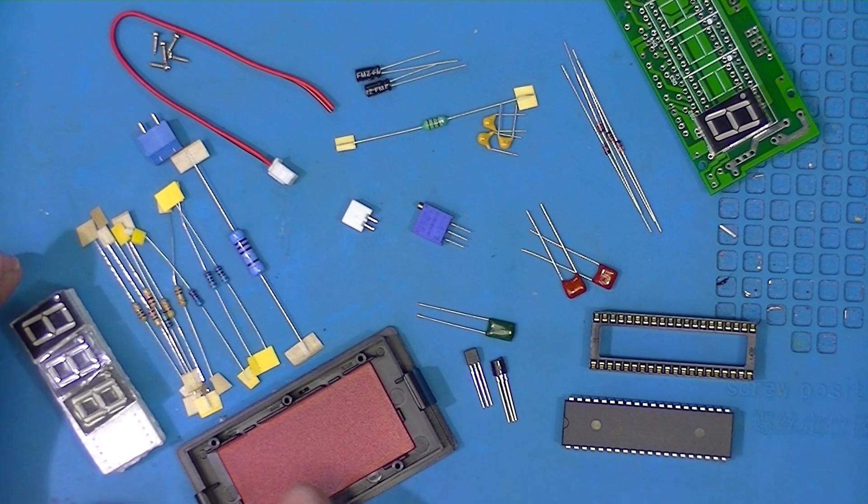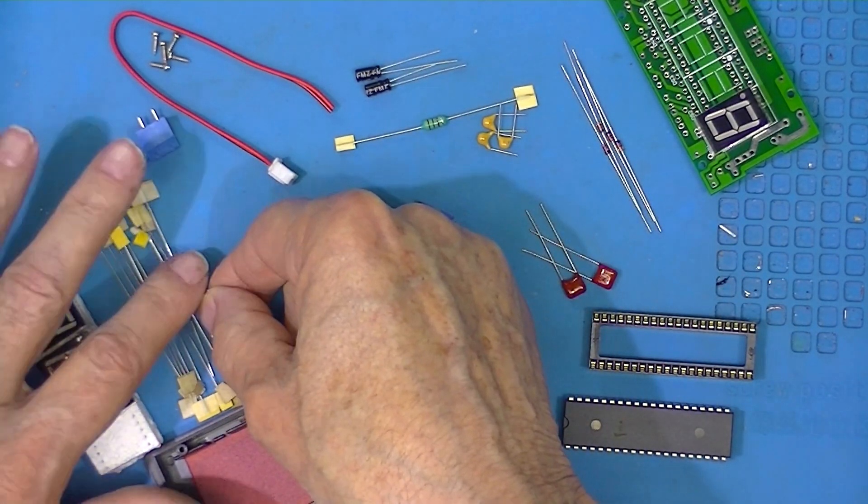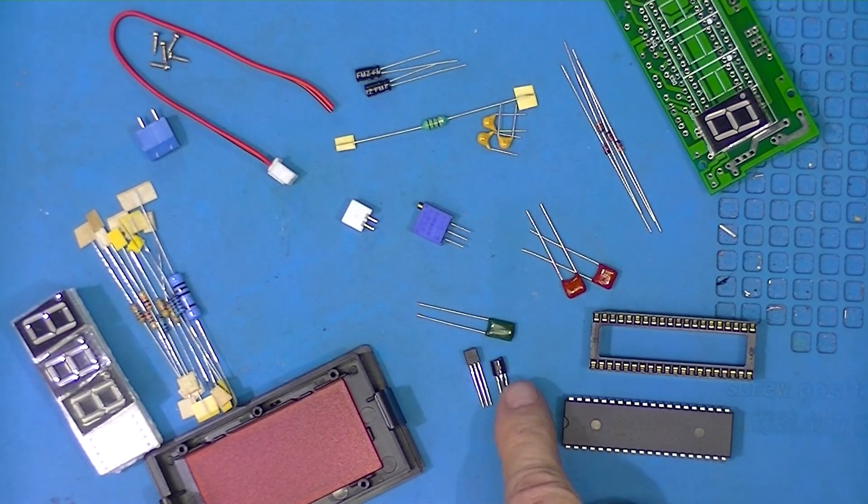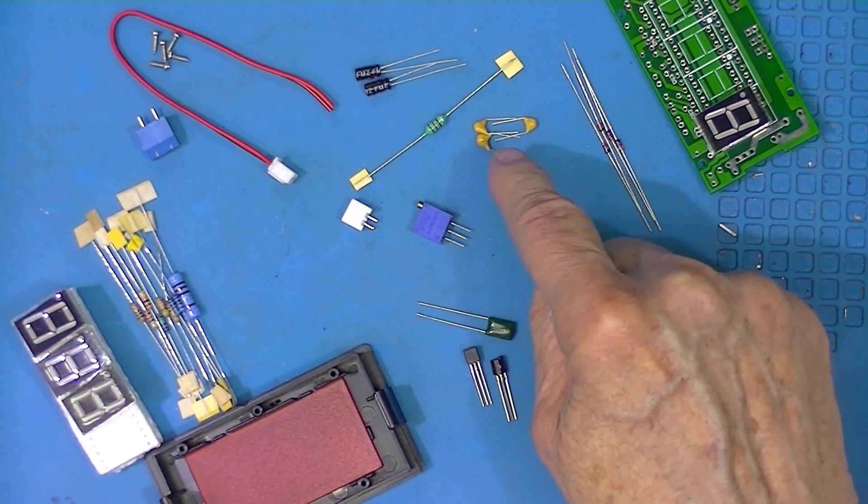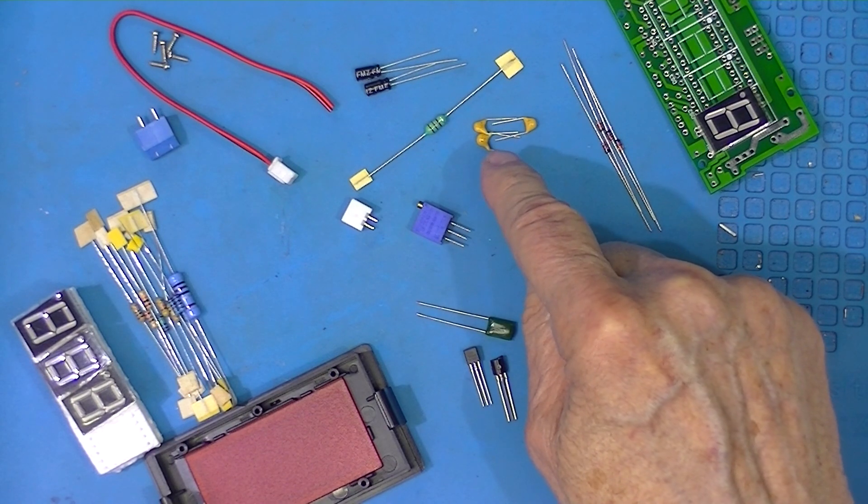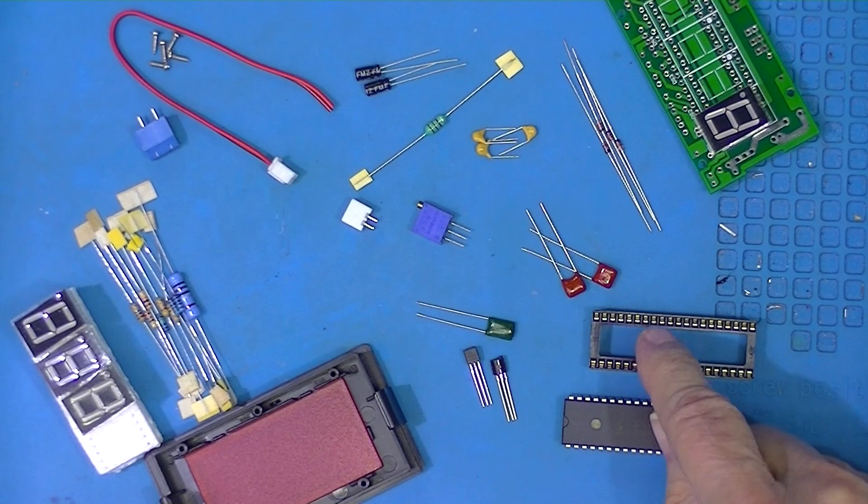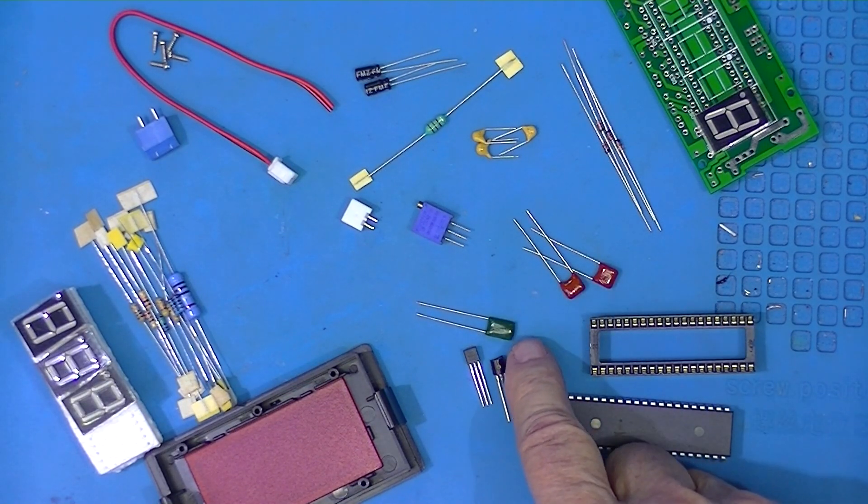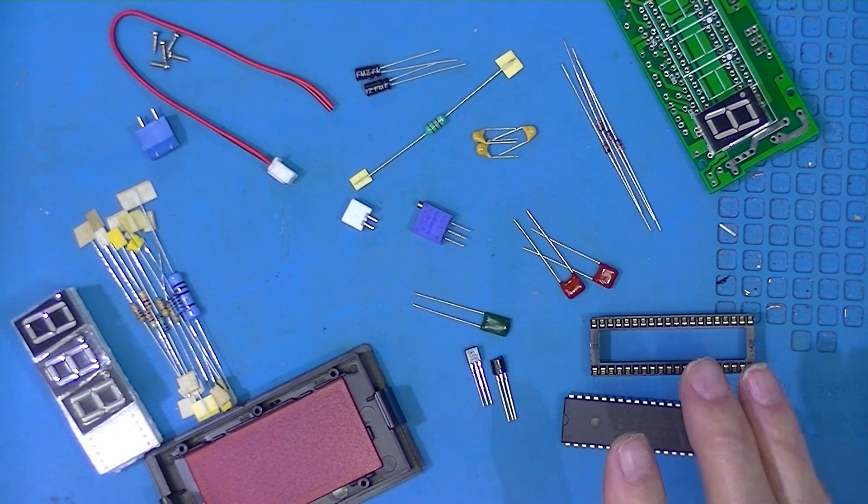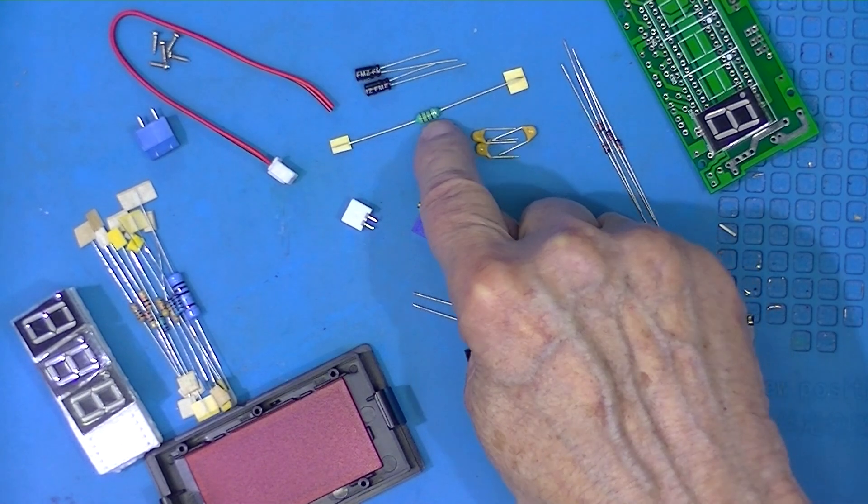These are resistors, you know what they look like. These are capacitors, three ceramic capacitors. They refer to them as monolithic capacitors, then two polypropylene, one polyester.